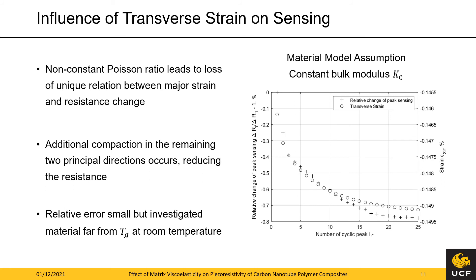These observations underline the influence of the transverse behavior on the sensing capacities observed in the first load case. For that purpose a longer cyclic load case with 25 repetitions was simulated under the assumption of a constant bulk modulus. The relative resistance change of peak sensing and the transverse strain at each peak are illustrated in the figure on the right. The reasons for the reduced sensing capability are the same as in the first load case, namely an increased transverse compaction due to a non-constant Poisson's ratio. The magnitude however is small since the investigated material at room temperature is far from its glass transition temperature of 240 degrees Celsius, but can grow considerably for higher temperatures or materials closer to their glass transition temperature.